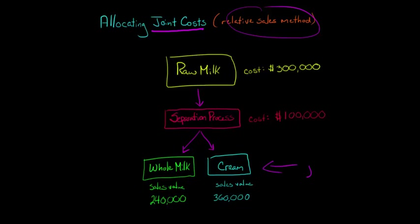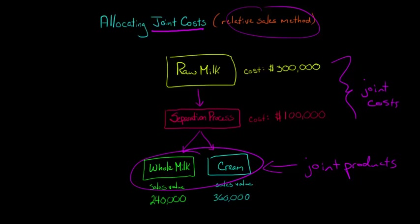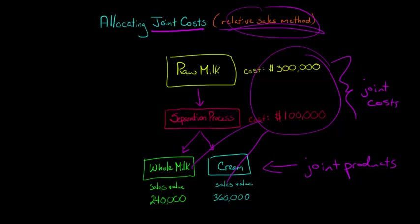These are our joint products and this is the split-off point. So all the costs up here, the $300,000 and the $100,000, these are joint costs. They're common costs. Both the whole milk and the cream have these common costs that we can't really separate. So we're going to use this relative sales method to allocate these costs to each of these products.